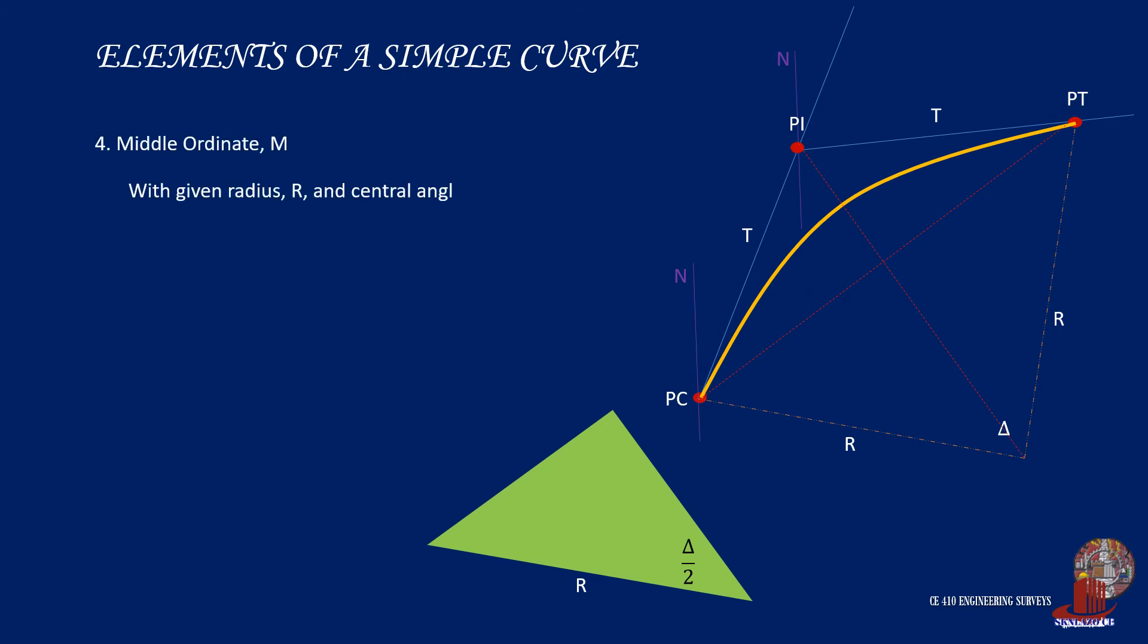The middle ordinate M is the perpendicular distance from the apex of the curve to the long chord. Note that the middle ordinate is actually a part of the radius R. If we use the triangle formed by PC and point O with the long chord, we still have half of delta as one of the angles of the right triangle and the sides are the radius R and R minus M. Take the cosine of half of delta. We have R minus M all divided by R. Isolate M by cross-multiplying the other terms and arranging the terms. We can factor out R to make the formula M is equal to R times 1 minus cosine of half of delta.